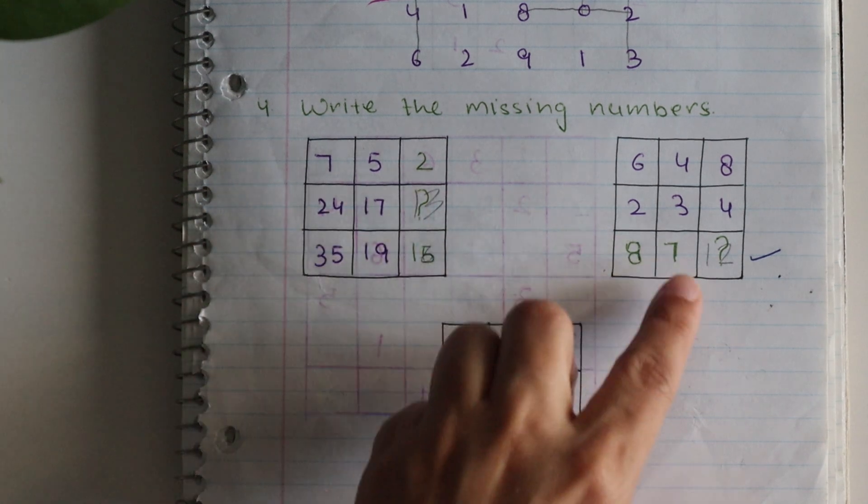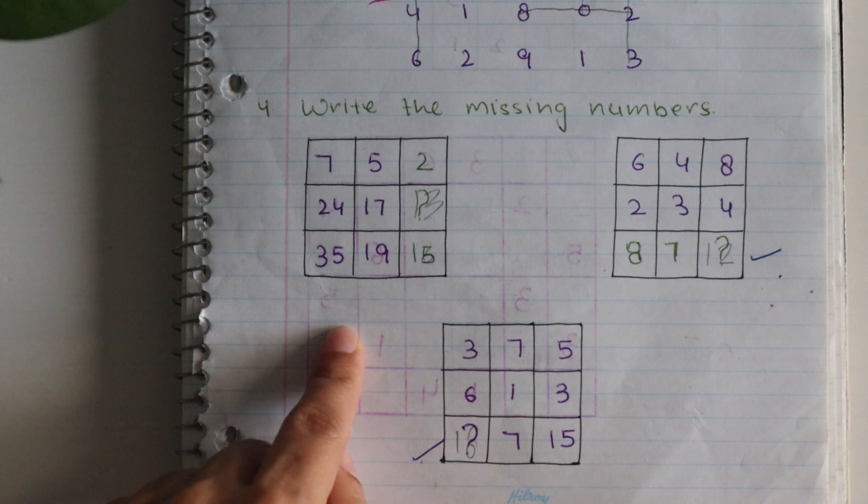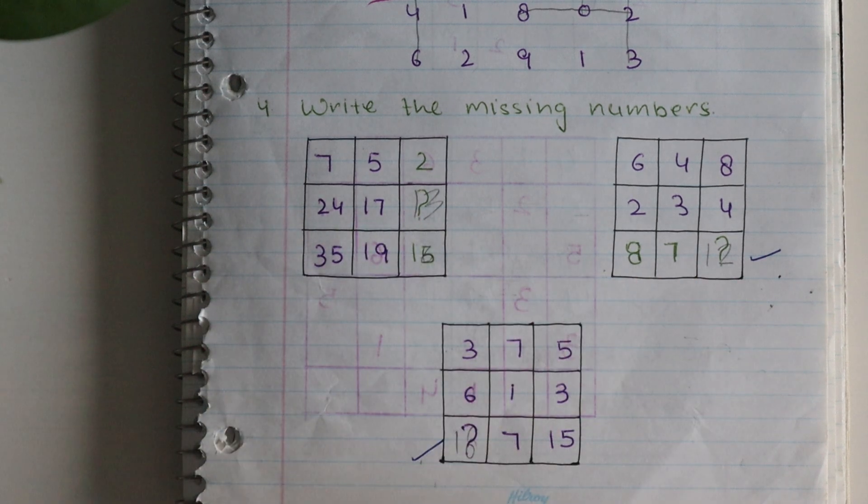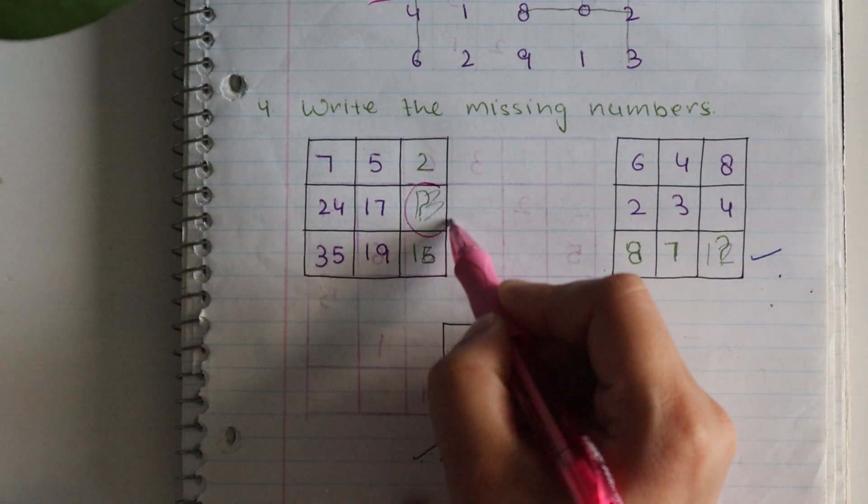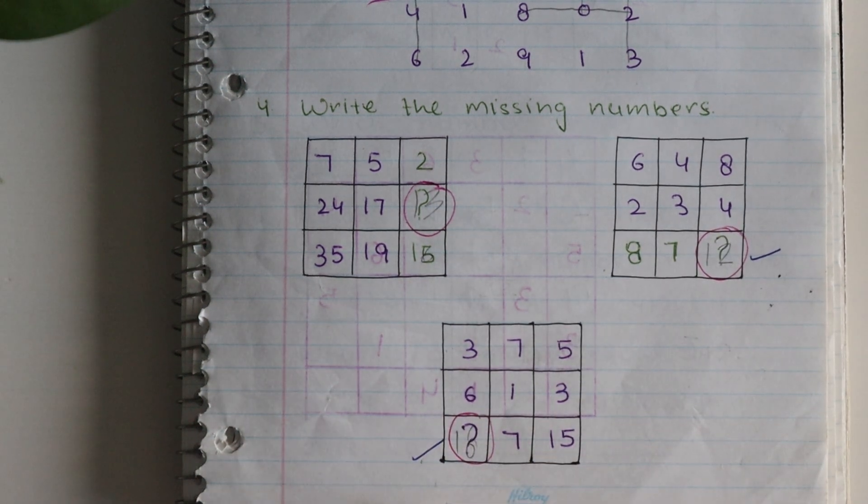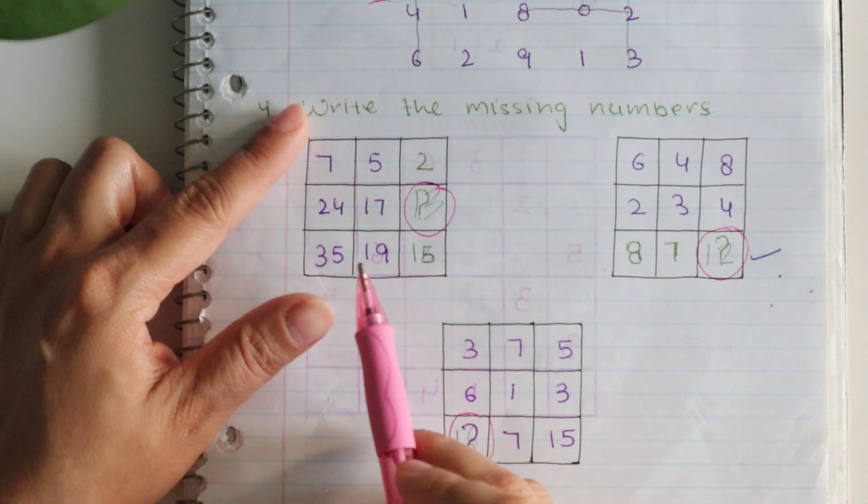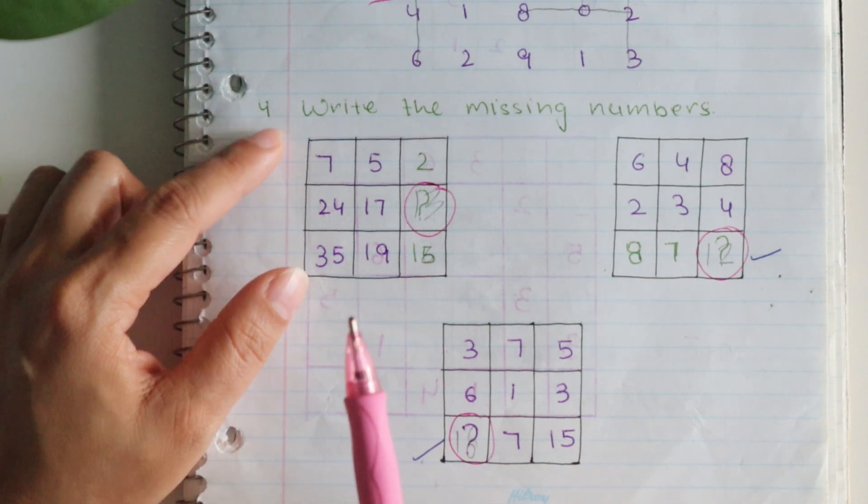Next we have one more very exciting math activity. Write the missing numbers. You can see again here I have written some numbers, and in each grid one number was missing. Like here this number was missing, this number, and this number was missing. So the child has to write the missing numbers here.